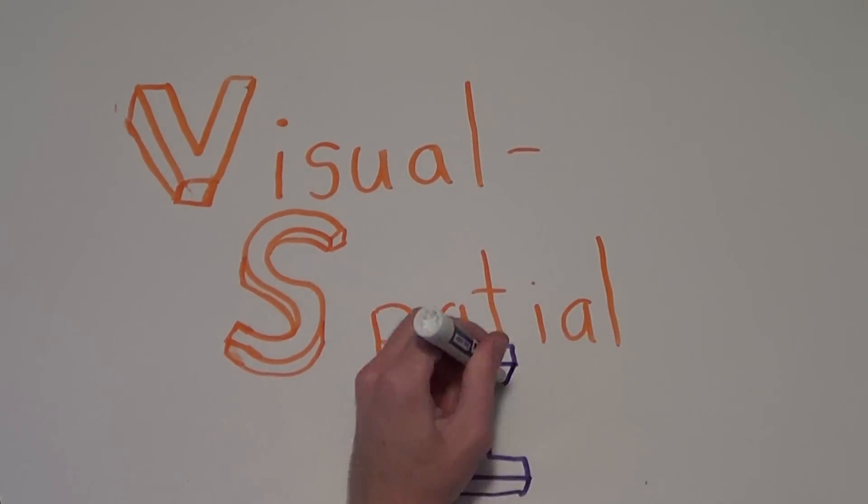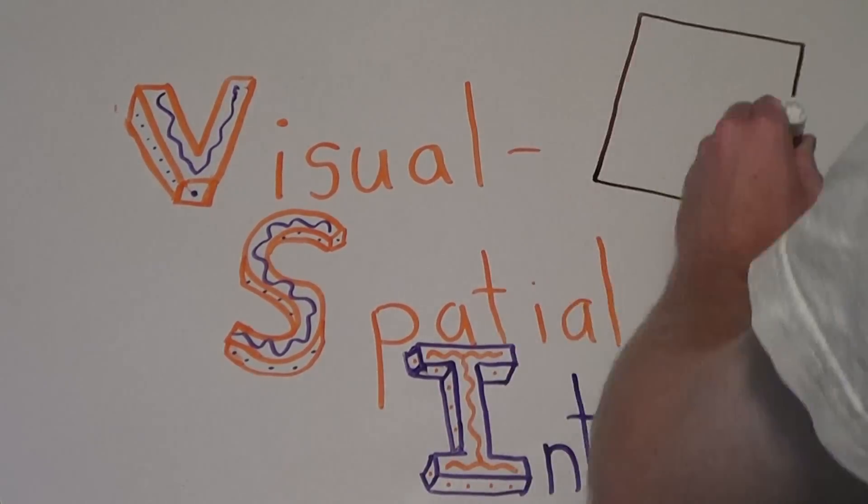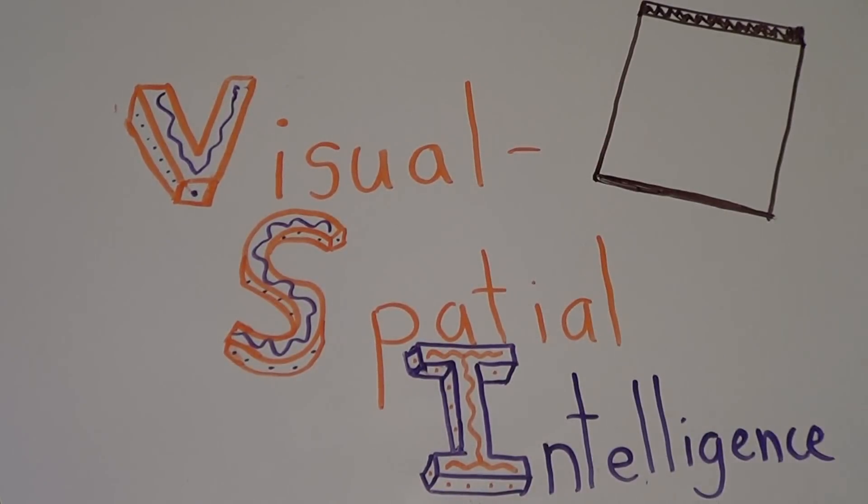Spatial intelligence is the ability to think in three dimensions. Picture-smart people like Picasso, Da Vinci, and Van Gogh think in images and may enjoy solving jigsaw puzzles, doodling, or daydreaming.